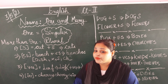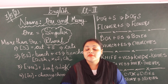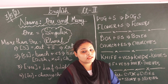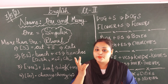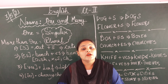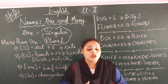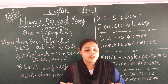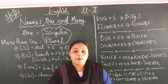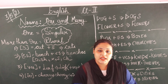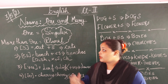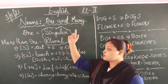How many types of nouns are there? There are two types of nouns. One is common noun and one is proper noun. Common nouns are general names, and proper nouns are specific, special names. Now we are going to see nouns: one and many.